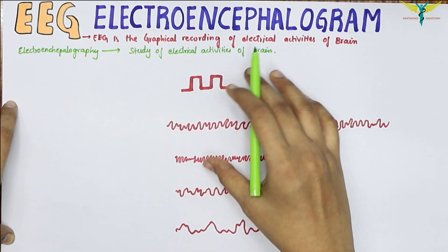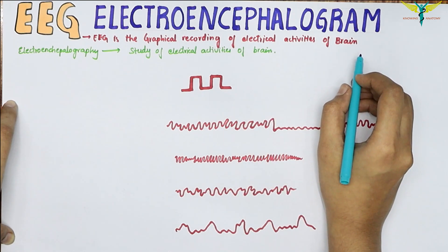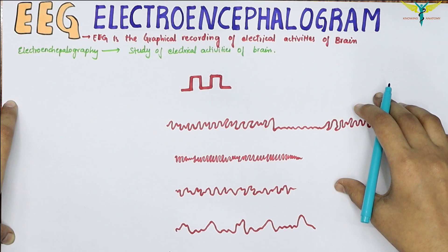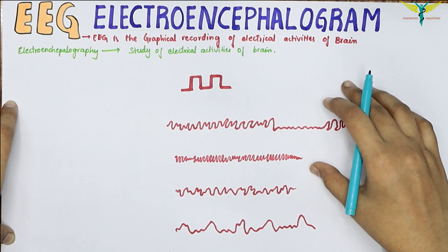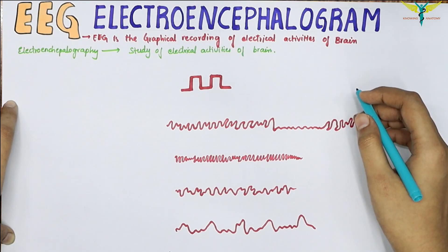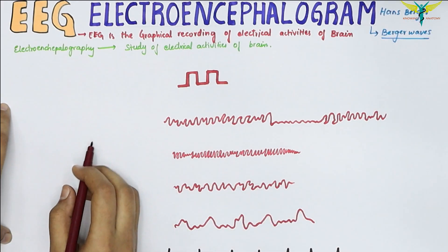A German psychiatrist named Hans Berger was the first person to analyze the EEG waves systematically, and hence the EEG waves are referred to as the Berger waves. Let's talk about the significance of the EEG.